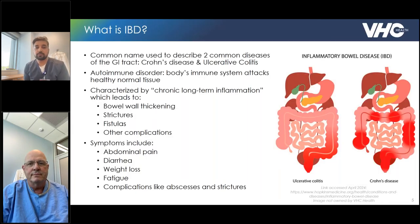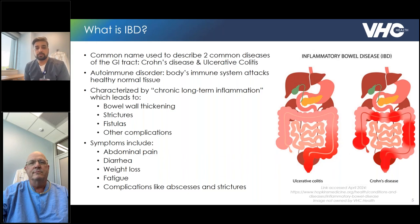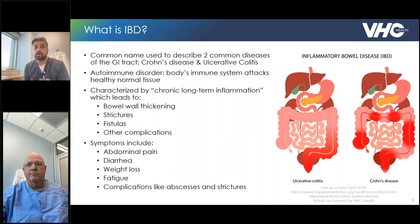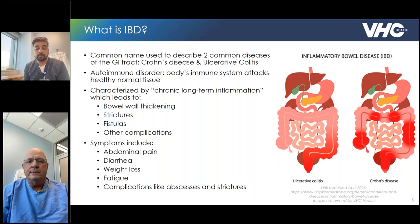IBD, inflammatory bowel disease, is a common name used to describe two distinct conditions: Crohn's disease and ulcerative colitis. It's an autoimmune disorder where the body's own immune system attacks healthy, normal tissue. We characterize this as a long-term, chronic condition. It's not something that resolves, and it can lead to complications like strictures — narrowing of the colon wall — fistulas, which are abnormal tracts, and malnutrition. Symptoms patients may experience include abdominal pain, diarrhea, rectal bleeding, weight loss, and malnutrition.